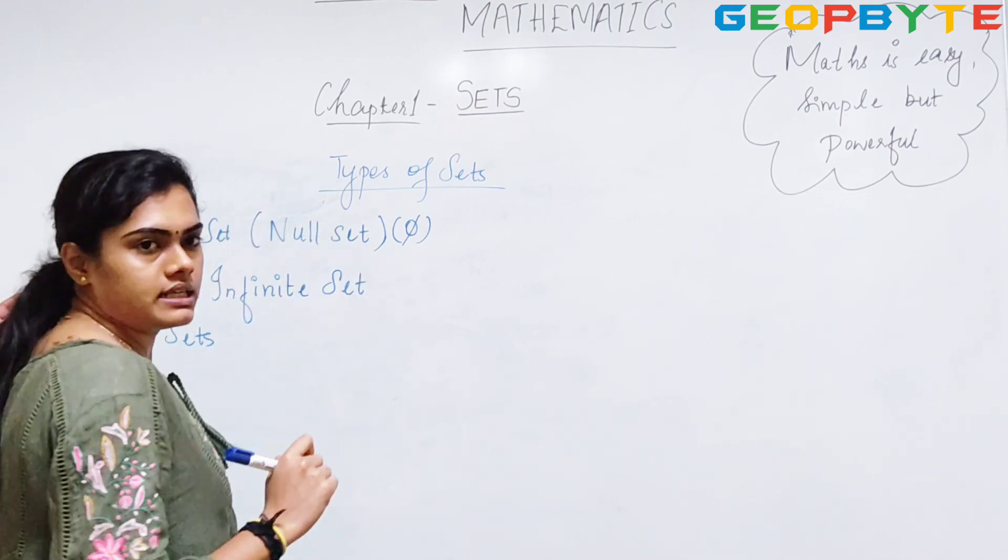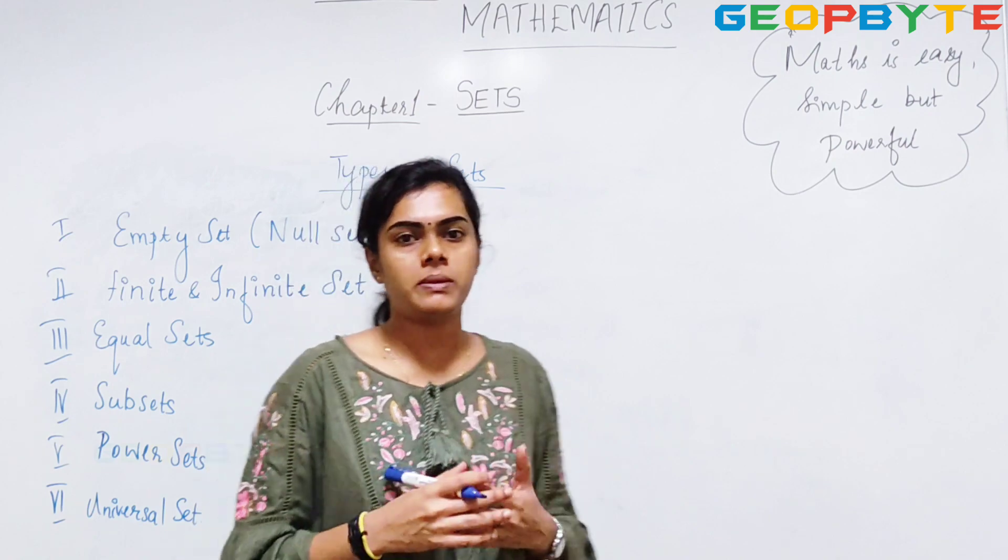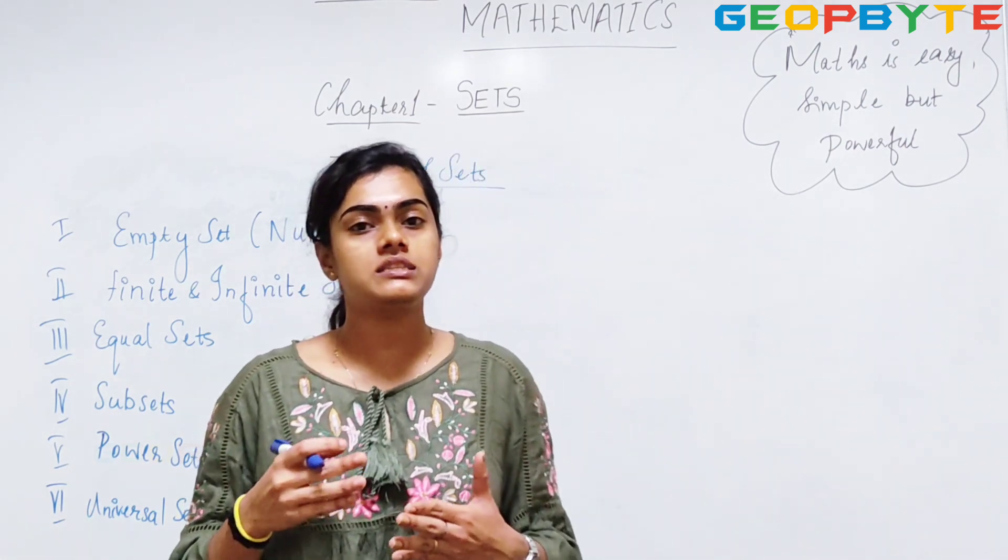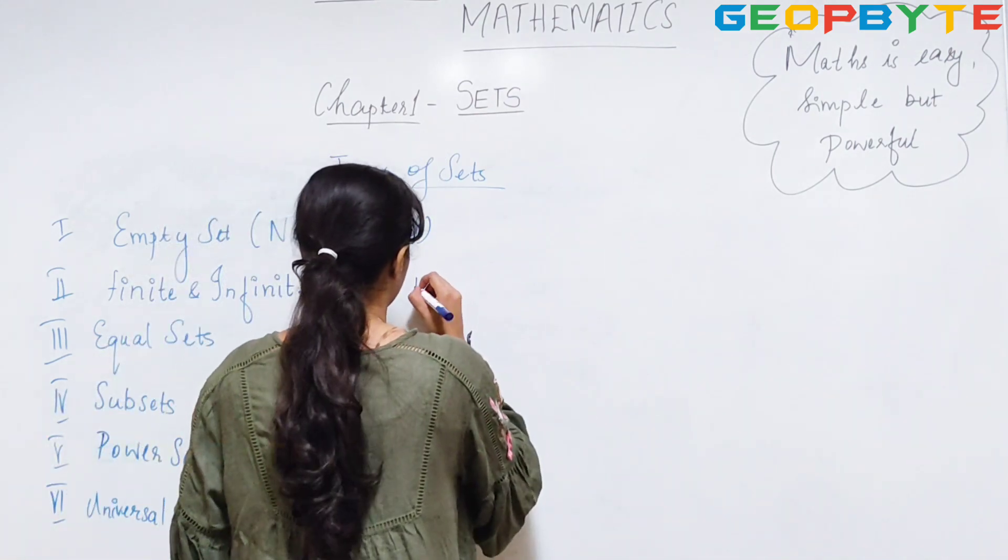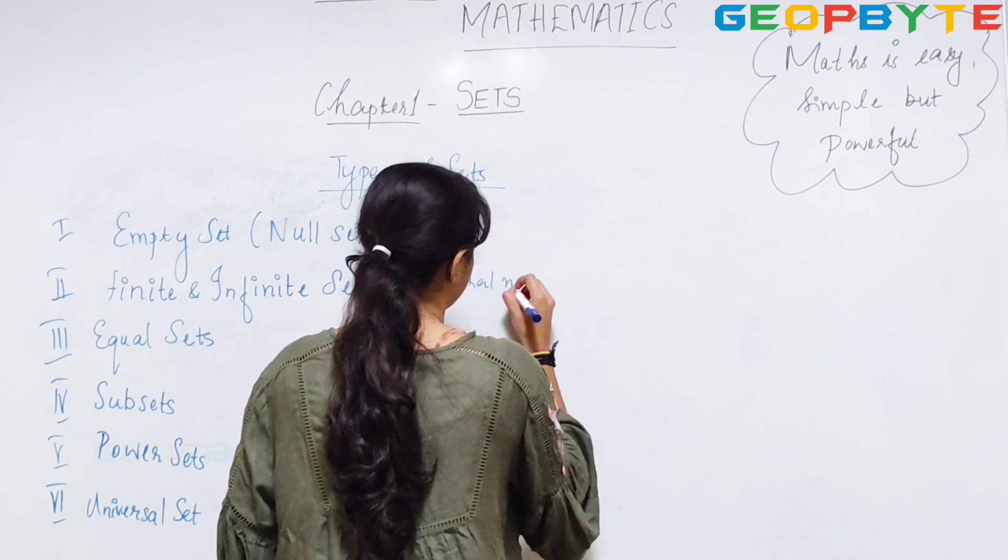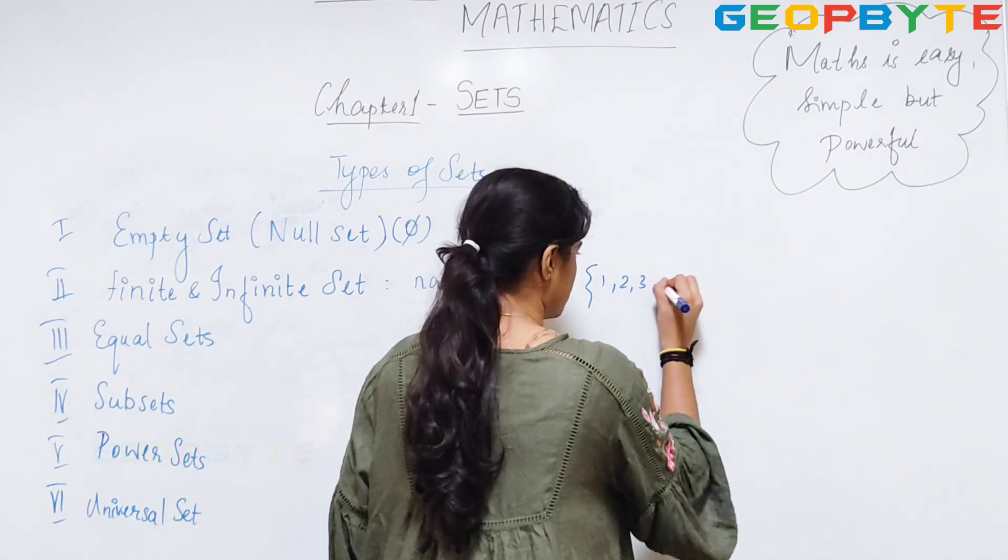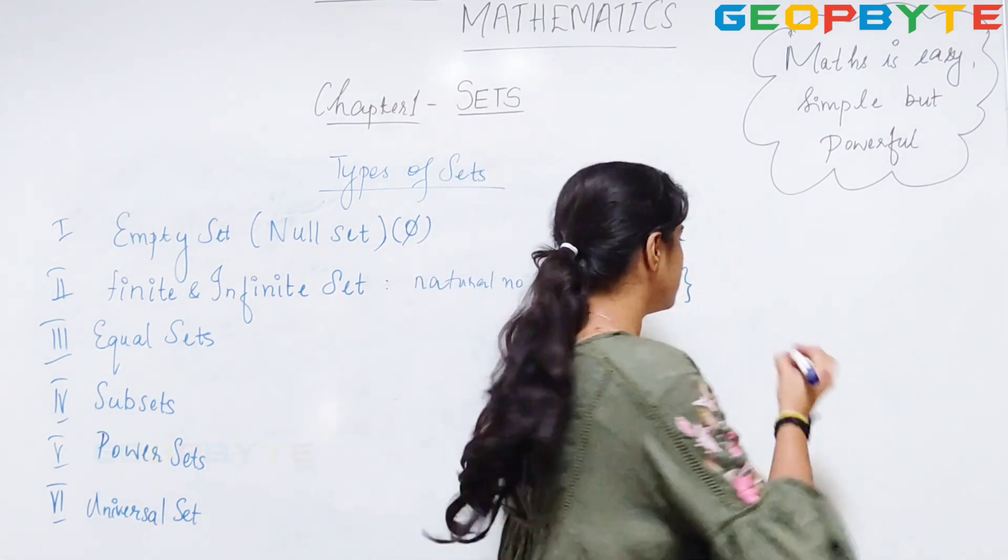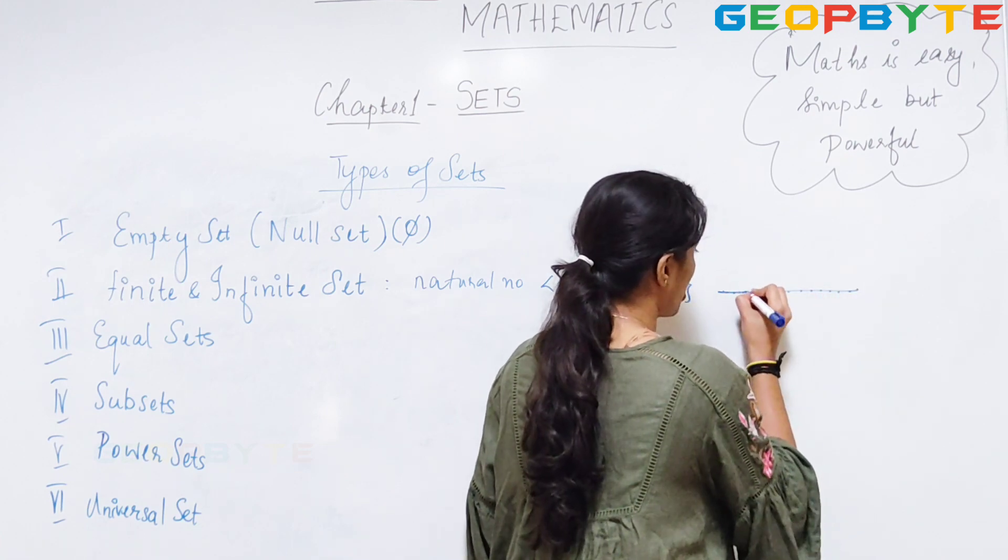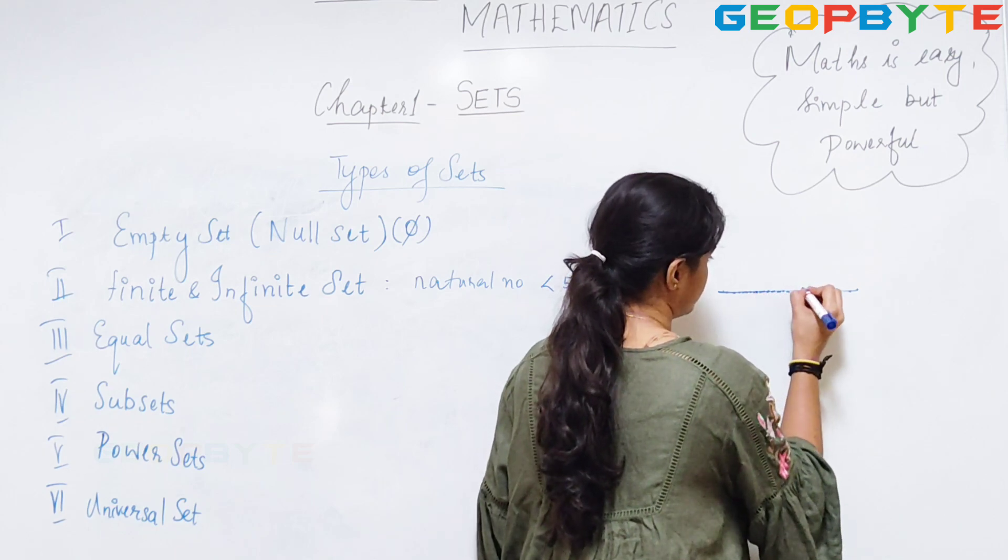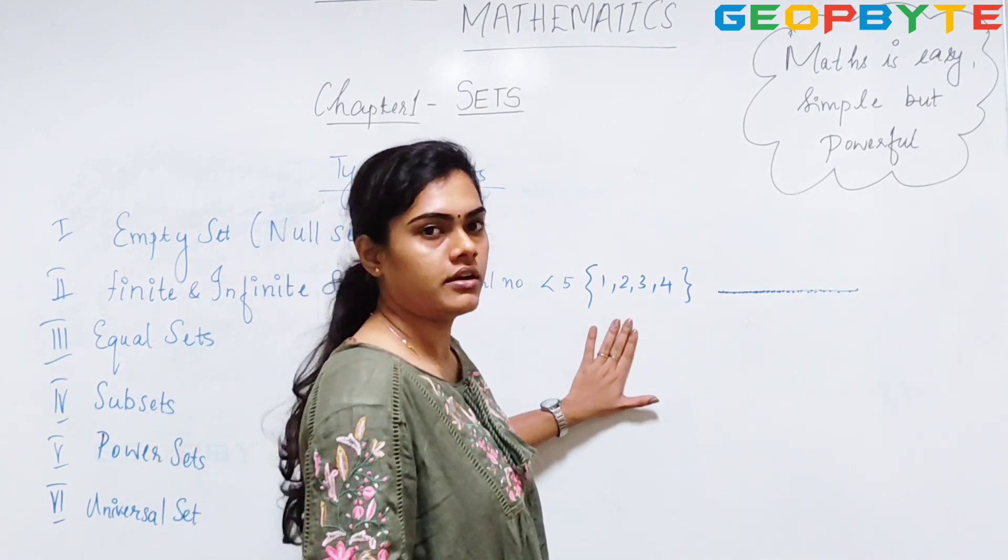Another variety, next type is finite and infinite set. Finite set is where my numbers are very defined and it's definite. For example, number of natural numbers less than 5 is definite. That means we have 4 elements. But number of points in a line is indefinite. That means I can put lot of points in a simple line. This is my indefinite set whereas this is my finite set.